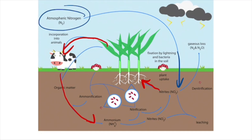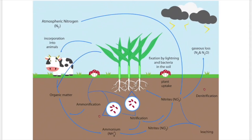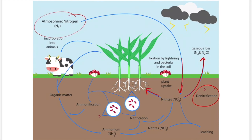Additionally, denitrifying bacteria can take dead organic matter and send the nitrogen back into the atmosphere — that process is denitrification, which converts nitrates back to atmospheric nitrogen. To review: atmospheric nitrogen enters the soil via nitrogen fixation, becomes nitrates taken up by plants, is consumed by consumers, and when they die, the organic matter returns to the soil. It is then either taken up by plants again or sent back into the atmosphere by denitrifying bacteria.